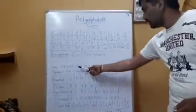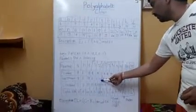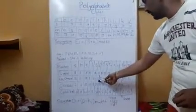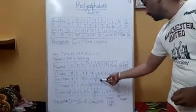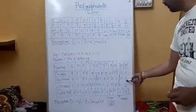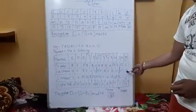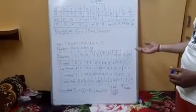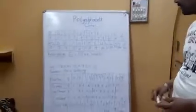We write the key PASCAL as 15, 0, 18, 2, 0, 11. Since the key ends before the plain text, we repeat the key. Two alphabets remain, so we write the first two letters of our key again — 15 and 0. If the plain text is longer than the key, we write the key multiple times until we reach the end of the plain text.